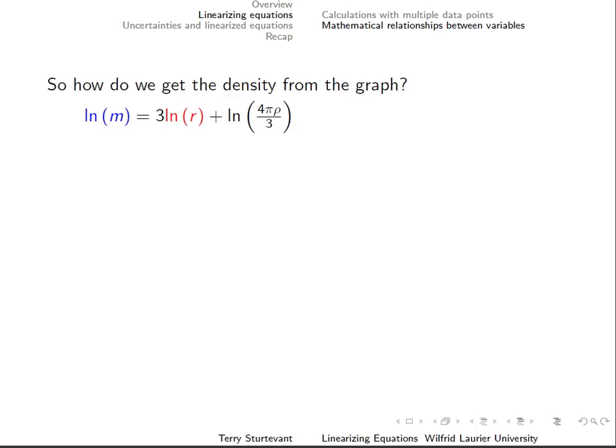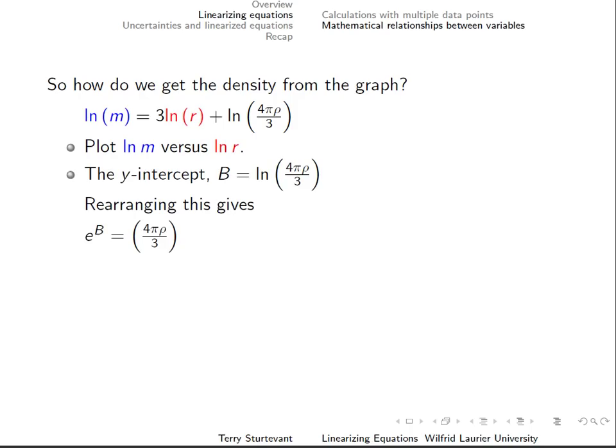Taking the exponential of the y-intercept and then rearranging gives the density. Again, mass and radius are no longer visible in the calculation of the density. Only the y-intercept matters.